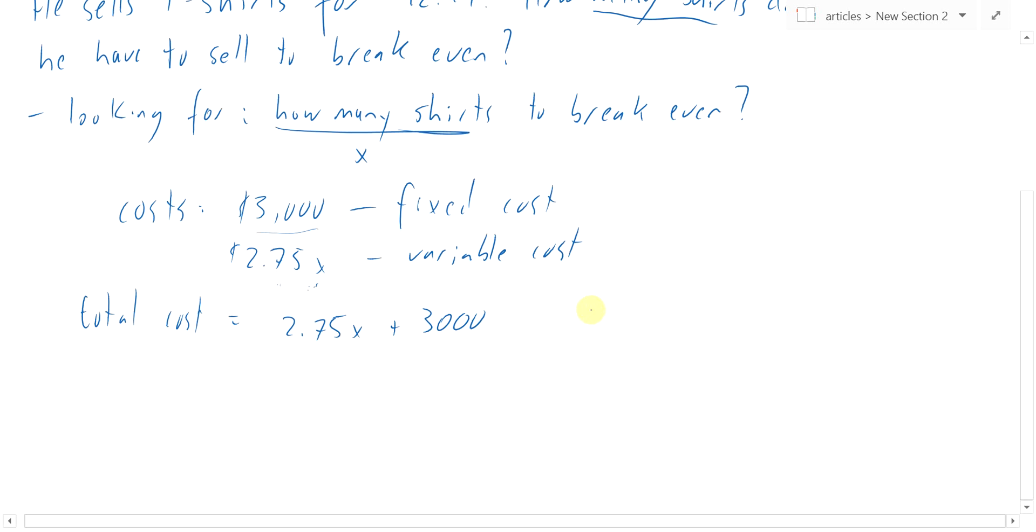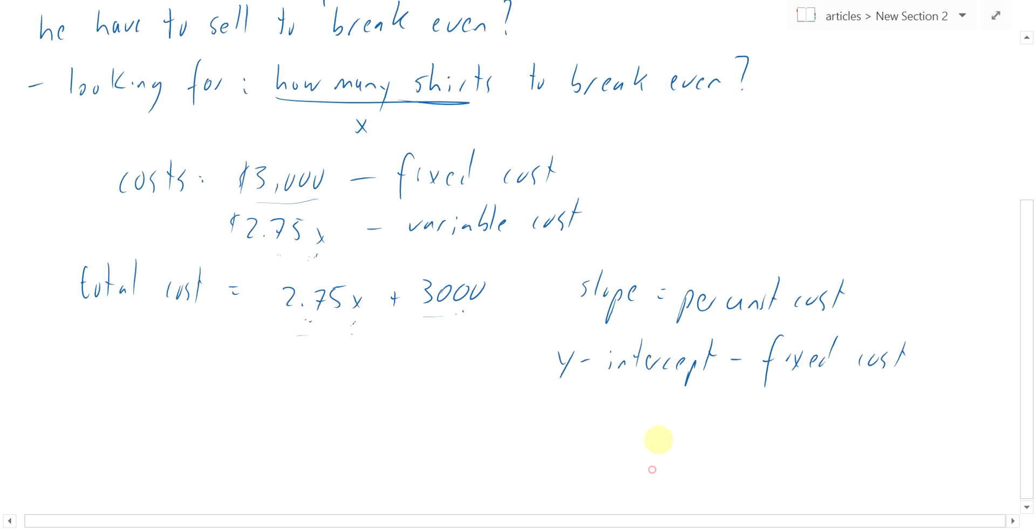So the slope here equals the per unit cost. It's the cost of each shirt. The y-intercept in this line here, right? That's my y-intercept. That's my slope. That's the fixed cost. And note, if x is 0, right, if he doesn't make any shirts at all, he still has to lay out $3,000 for this fixed cost.